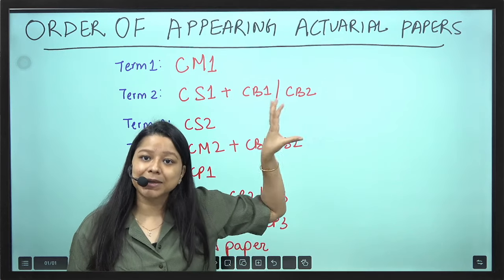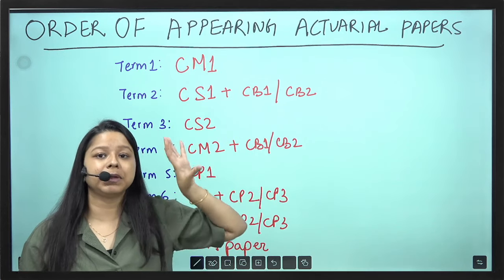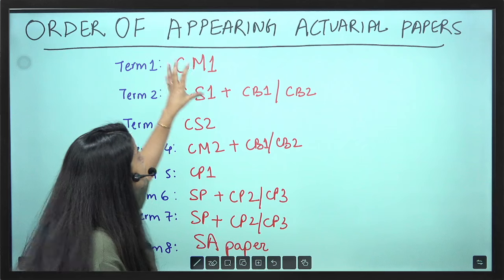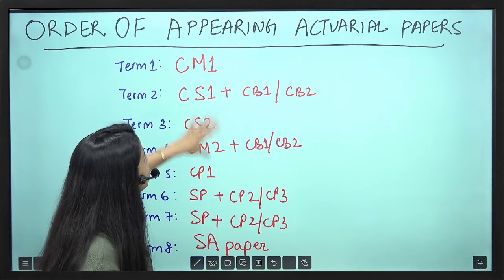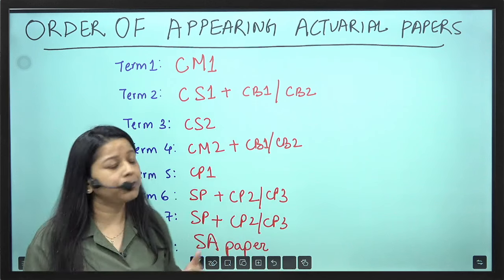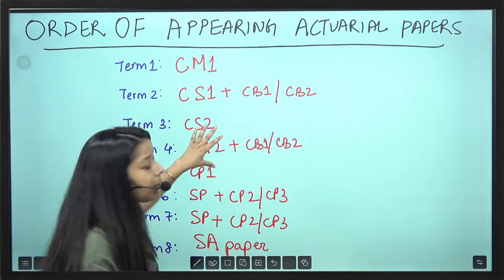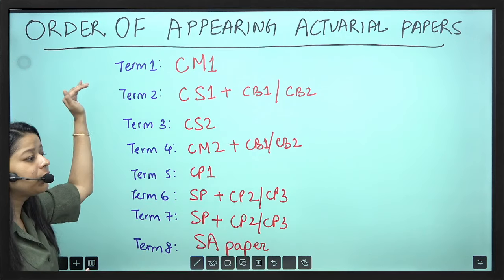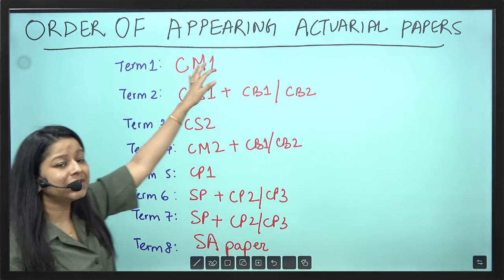This is Excel based examination. There is paper A and paper B. Paper B is Excel and paper A is Word. CM1, CS1, CS2, CM2 - these have paper B as either Excel or R programming. CM1 and CM2 has Excel, CS1 and CS2 has R programming. Your term 1, you will start off with CM1 paper.